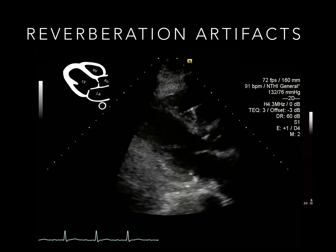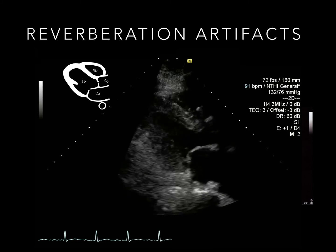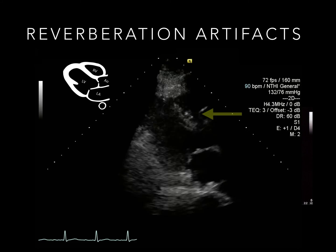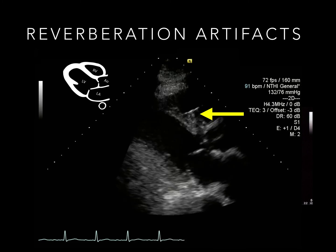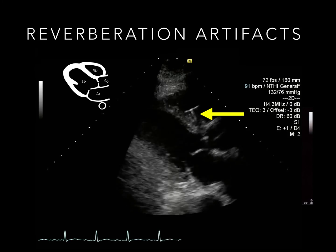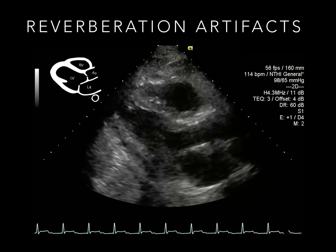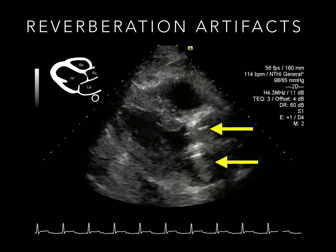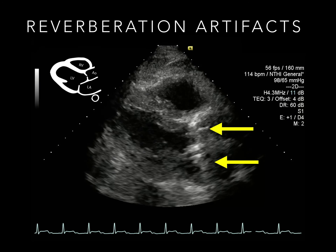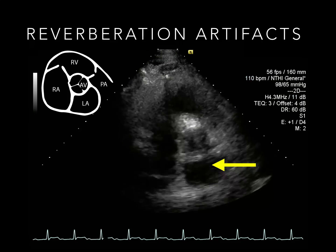This parasternal long axis image shows a pulmonary artery catheter in the right ventricle. Multiple reflections within or around this structure produce multiple artefacts behind it, called a ring-down artefact. Calcification or prosthetic material causes a similar effect, seen here in this parasternal long view and here in this short axis view.